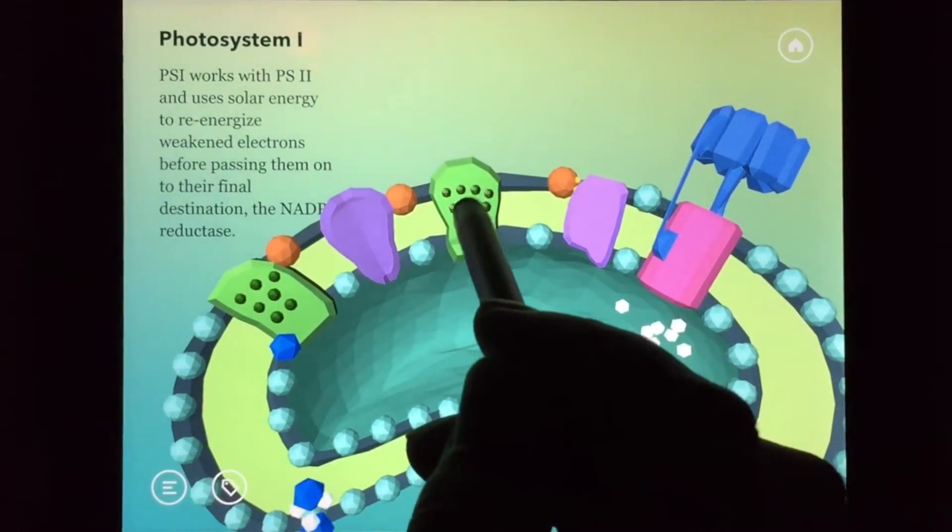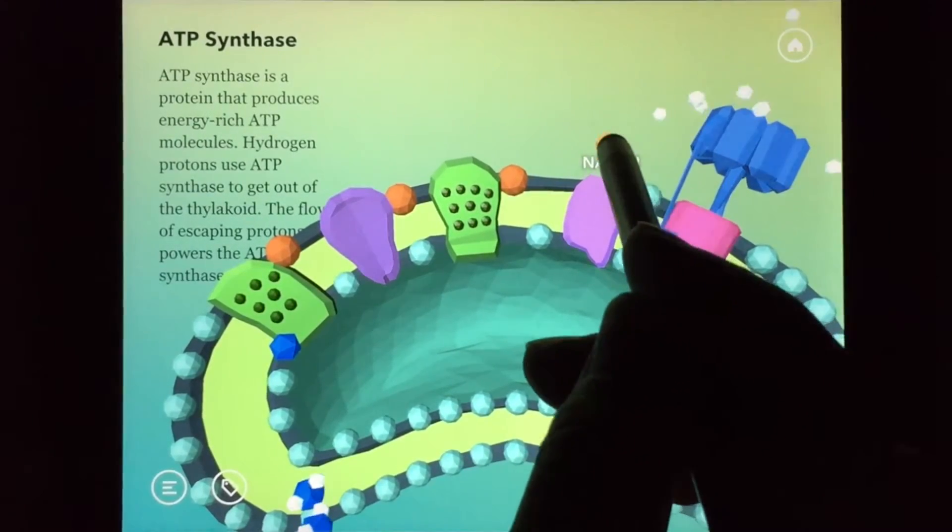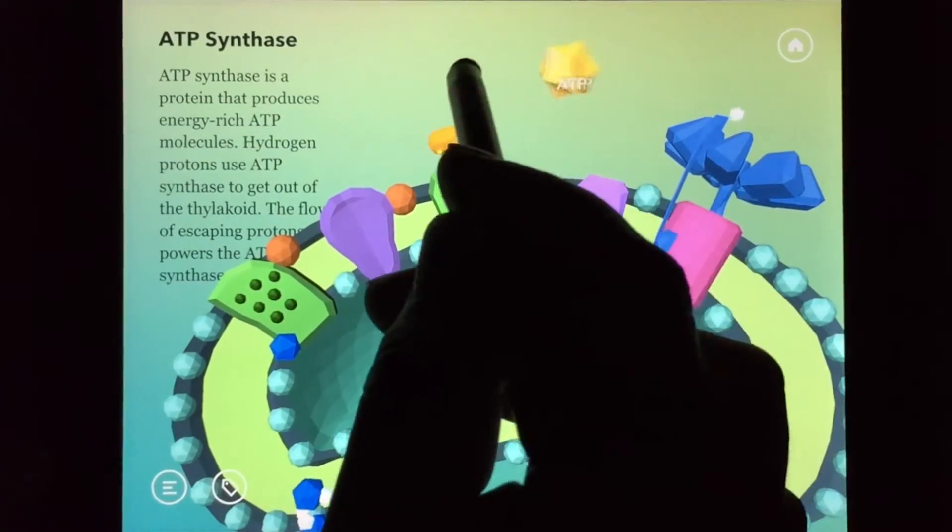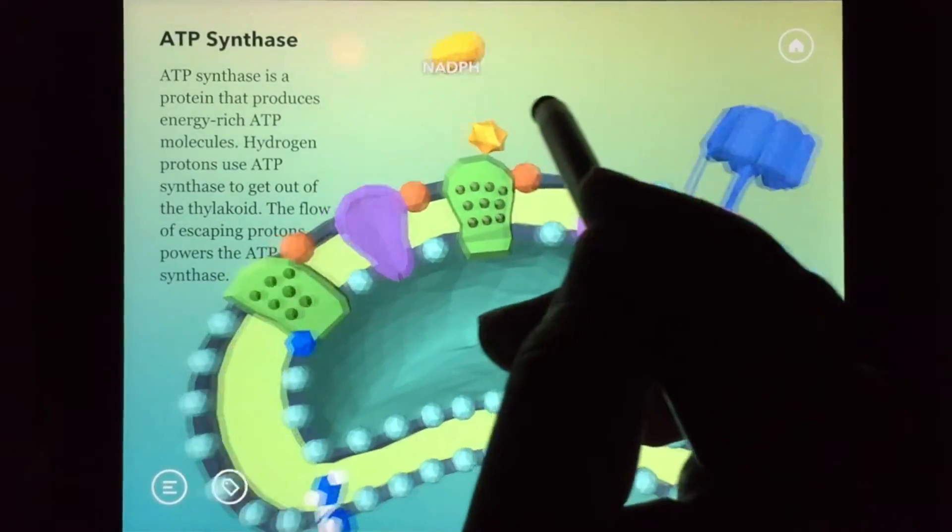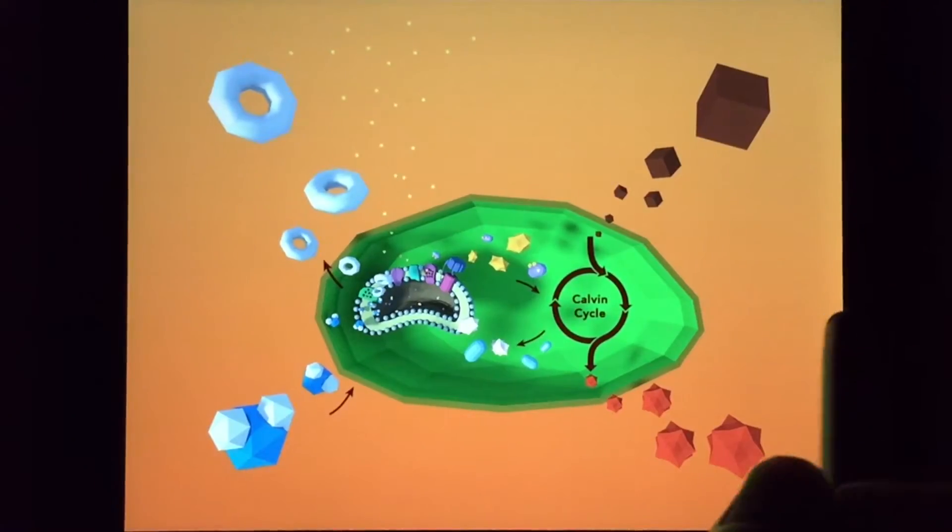When the chloroplast is receiving a steady supply of photons, NADPH and ATP molecules are being provided. They are used in the stroma to fuel sugar assembly during the second stage of photosynthesis called Calvin Cycle.